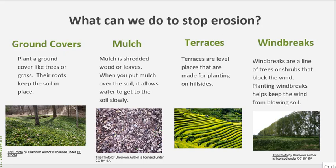What can we do to stop erosion? First, we can plant ground covers. Planting a ground cover like trees or grass — their roots keep the soil in place. Second is mulch. Mulch is shredded wood or leaves. When you put mulch over the soil, it allows water to get to the soil more slowly and it doesn't wash away as quickly.